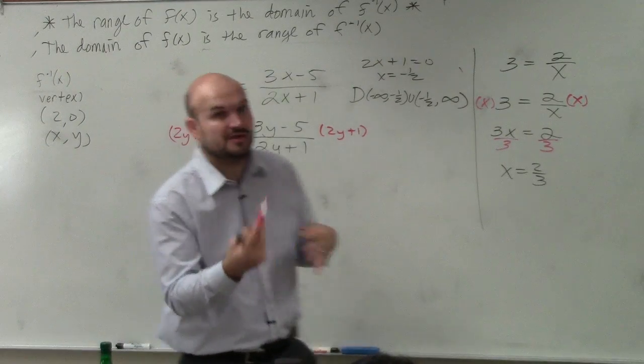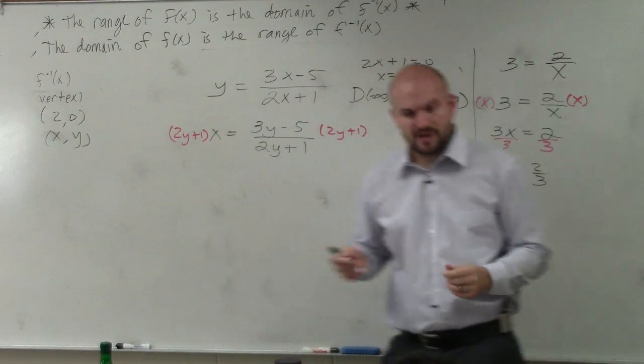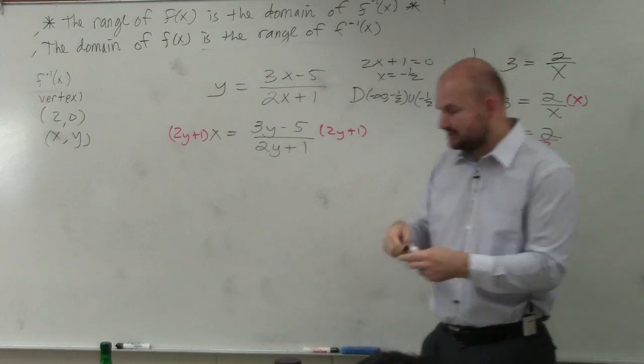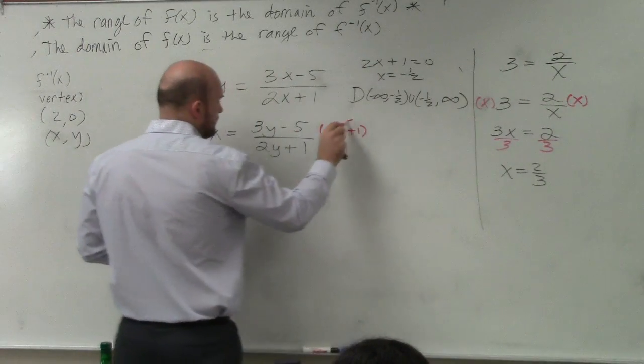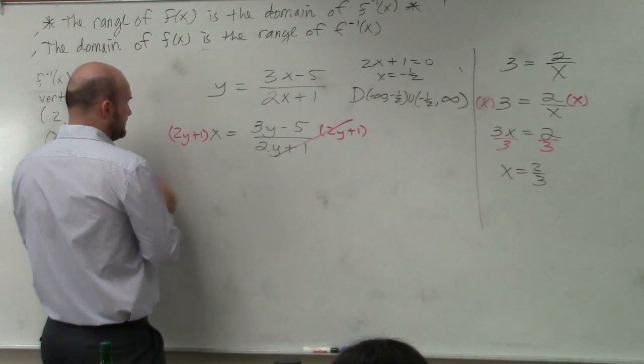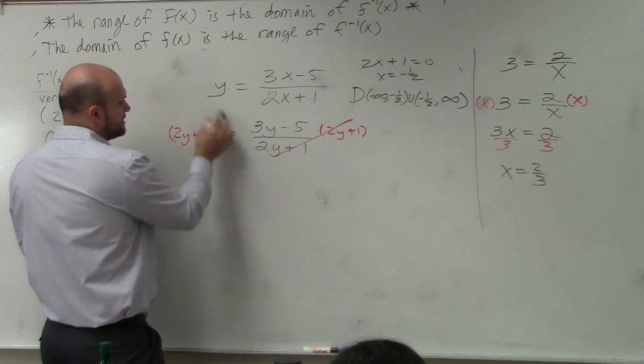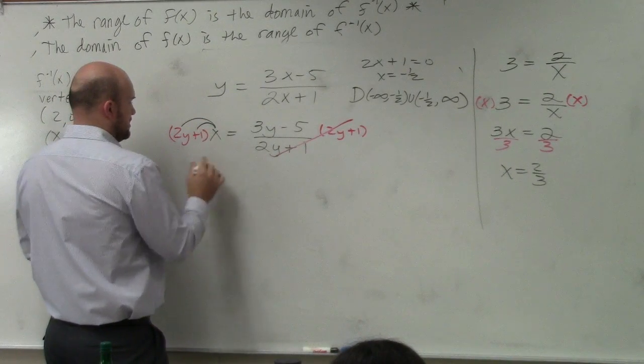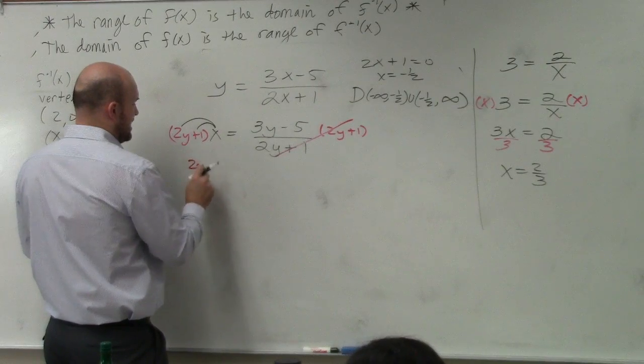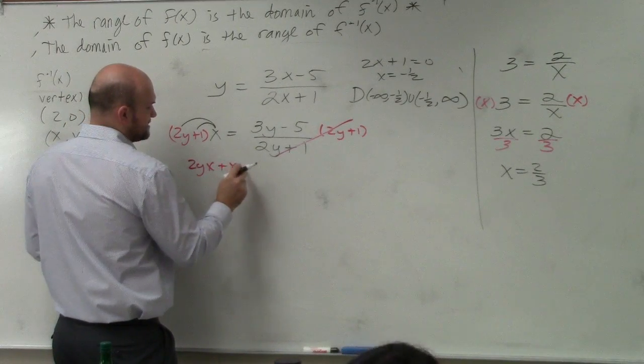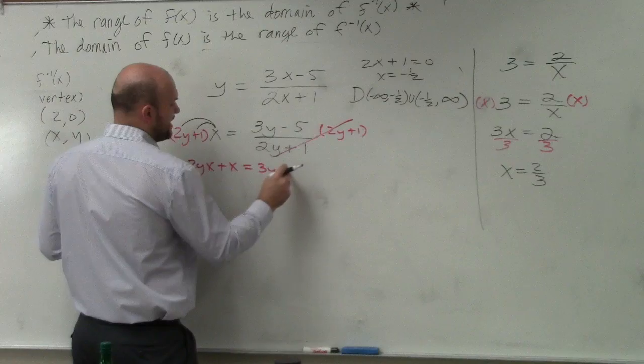And whatever you do on one side, as long as you do on the other side, you're not changing the problem, right? So now this divides to 1. And now I can distribute, apply distributive property here. So therefore, now I have 2yx plus x equals 3y minus 5.